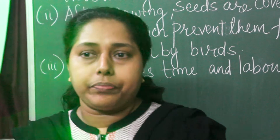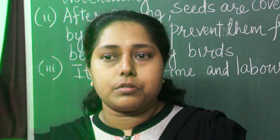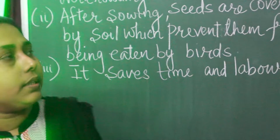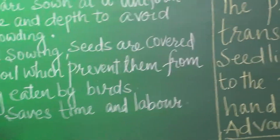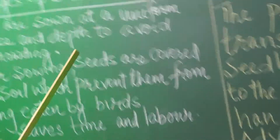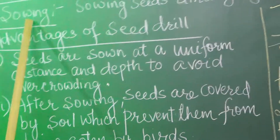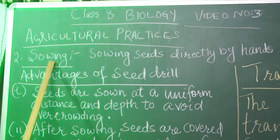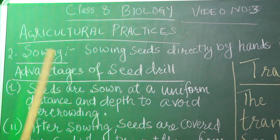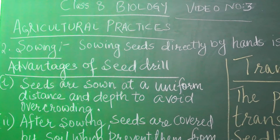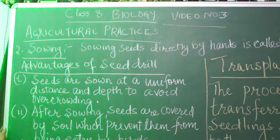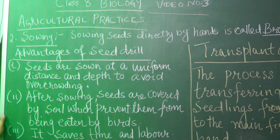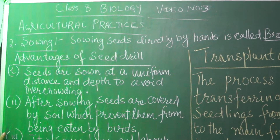Today we are going to study about the second basic agriculture practice — that is, sowing. After preparing the soil, the next step is sowing of seeds.